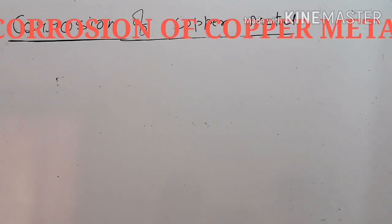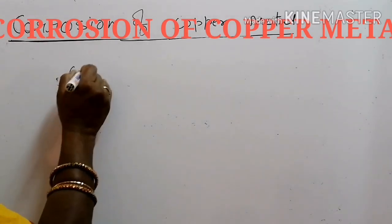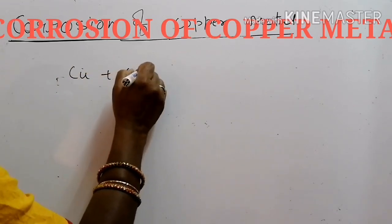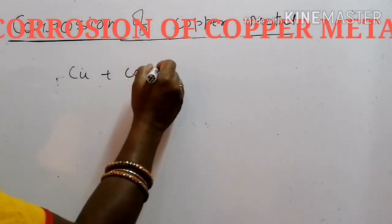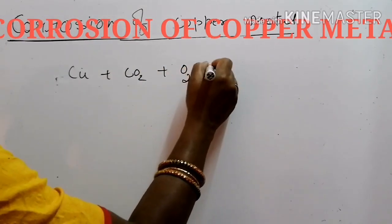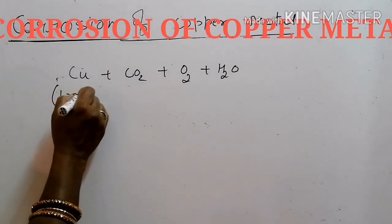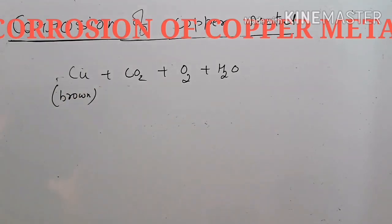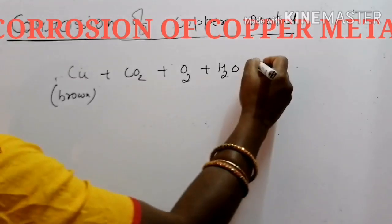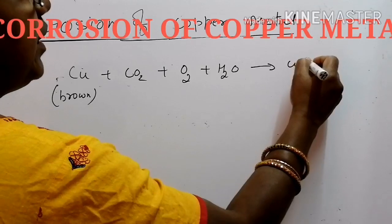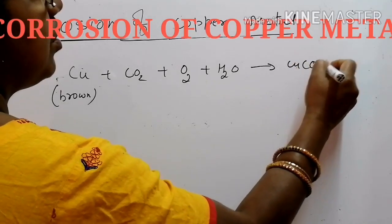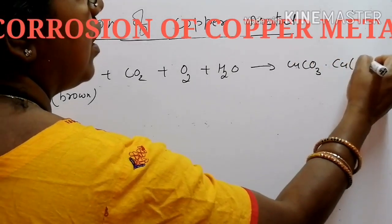Next metal for which we have to learn the corrosion is copper metal. Copper metal when comes in contact with carbon dioxide in presence of oxygen and water. The original color of copper is brown in color. When it comes in contact with this, it will form basic copper carbonate.